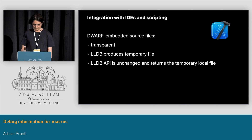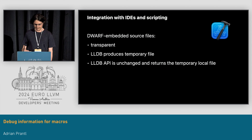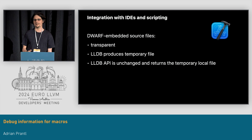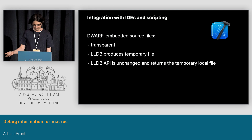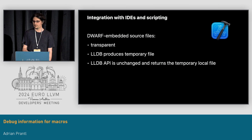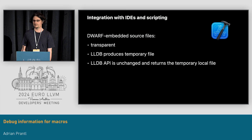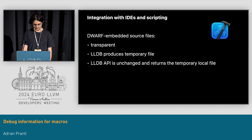Of course, we also implemented support for this embedded source file DWARF extension in LLDB. You might now ask what that means for clients of LLDB — what about an IDE or an existing script? Do they all need to be updated in order to support this new feature? No. When LLDB encounters an embedded source file in the debug info, it will produce a temporary file on disk and hand that out via the API. This way, the feature is entirely transparent to IDEs and scripts and just works out of the box.